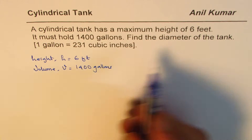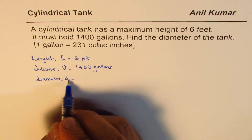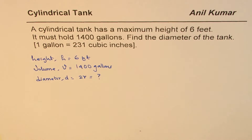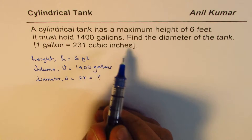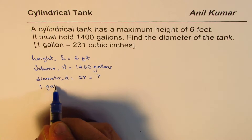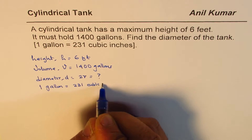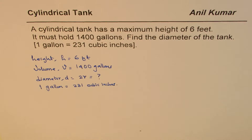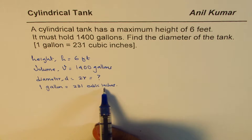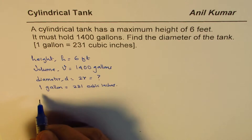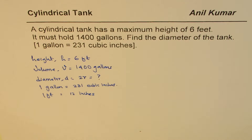We need to find the diameter of the tank. Diameter d is twice the radius, so diameter equals 2 times r. We are also given that one gallon equals 231 cubic inches. This suggests we can convert the volume from gallons into cubic inches, and if we do that, we also need to convert the height into inches. We know one foot equals 12 inches, so we'll use all this information to do the conversion.